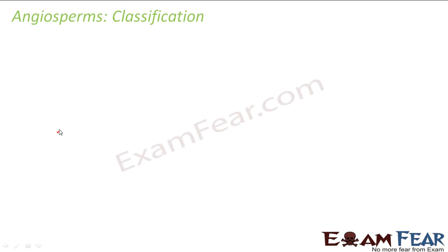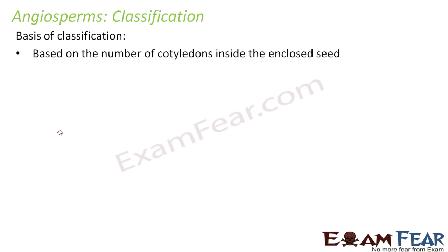A need arose to further classify angiosperms because it was observed that even inside the seeds there were some leaf-like structures known as cotyledons. There were some seeds with just one cotyledon, whereas other seeds had two cotyledons. So based on that, angiosperms were further classified — the basis being the number of cotyledons inside the enclosed seed.